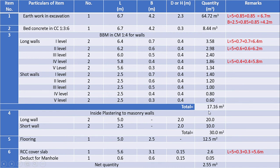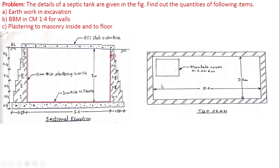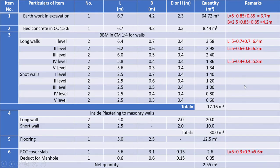Item 4: inside plastering to masonry walls. The clear inside dimension of the septic tank is plastered and its dimensions are 5 meters length and 2.5 meters breadth. There are two long walls and two short walls. The inside height of tank is equal to 2 meters as given, and quantity of plastering is equal to 30 meter square.